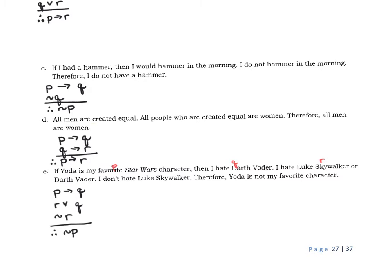With part C and part D, you'll hopefully recognize those as some of our laws or fallacies. On part D, you do have to make some switches: 'all men are created equal' means if you're a man, then you're created equal. 'All people who are created equal are women' means if you're created equal, then you are a woman. Therefore, all men are women — so therefore, if you're a man, then you're a woman.